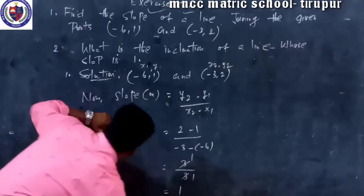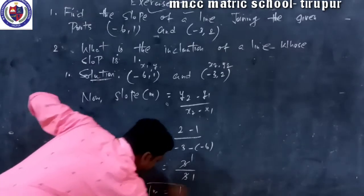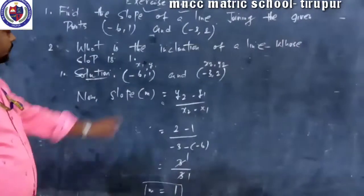It's going to be 1. M equal to 1. M is the slope.